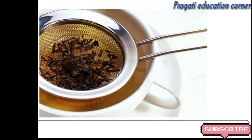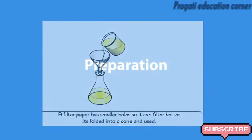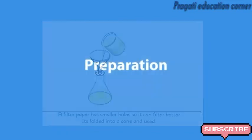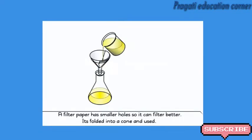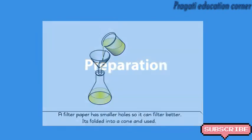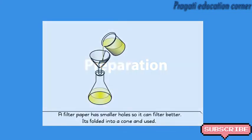Even the strainer that we use to separate tea leaves from liquid tea is a type of filter. You might have seen that we separate tea leaves and tea by the help of a strainer — that is also a process of filtration. So filters allow liquids to pass through them, but not solids.